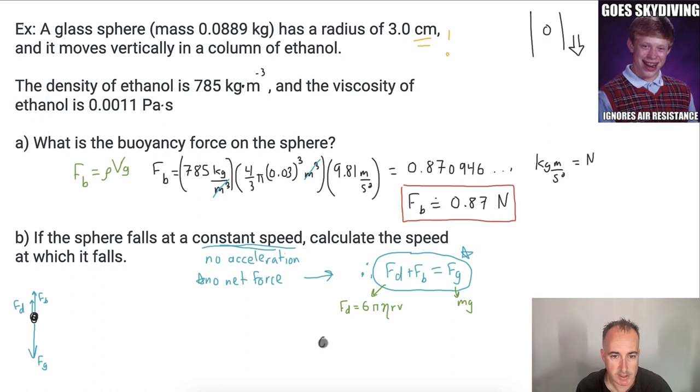And I have the math here. So let's put these all in and see what we get. So now I'm going to get, let's see, 6 times pi times the viscosity. Do I have the viscosity? I do. It's 0.0011. All that times the radius of the sphere. Oh, that's 0.03. Remember that's in meters. Times the speed of the sphere. Oh, I actually don't know that. That's what I'm trying to find.